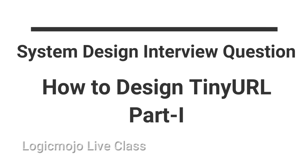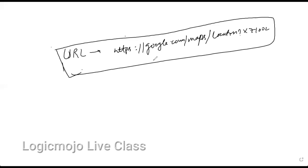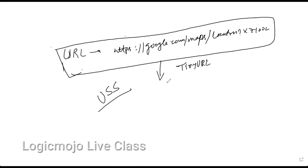Starting with google.com, these map URLs come with location markers like X, Y, Z, one, two, three — resulting in a huge URL for a map location you want to share. What you can do is use any kind of URL shortener service, like TinyURL or bit.ly. You provide this long URL and basically what it gives you is a short URL.